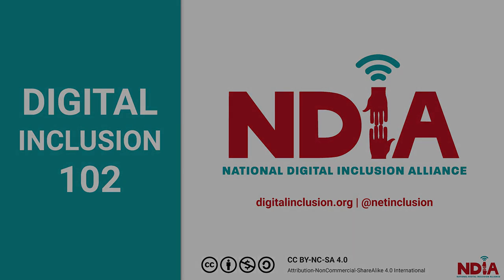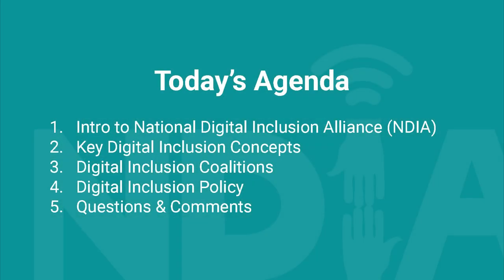So happy to be here with all of you. For today's agenda, we're going to start off by introducing the National Digital Inclusion Alliance if you haven't heard of us before. Then we'll jump into some key digital inclusion concepts, followed by digital inclusion coalitions and ecosystems — understanding how digital inclusion coalitions are formed, how they operate and continue to develop. We'll also talk about digital inclusion policy, the library system's role in state digital equity planning, and the federal capacity and competitive grant process. After that, we'll have a Q&A segment, so please put any questions in the Q&A chat box.